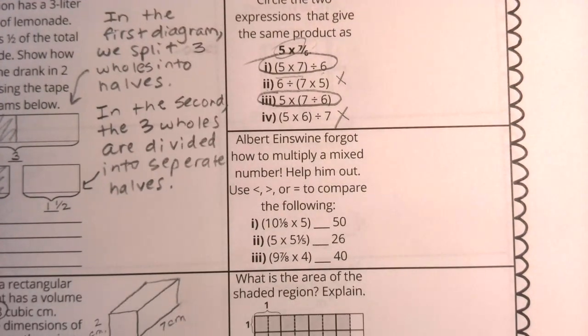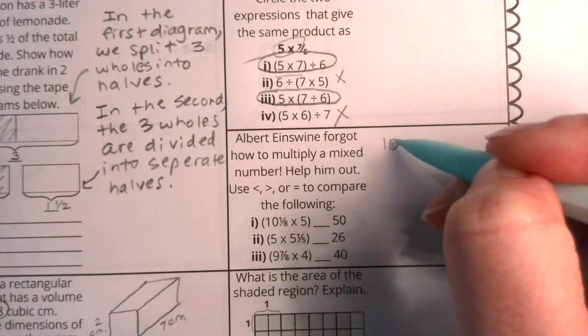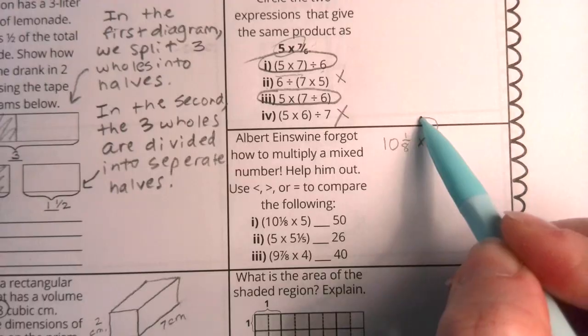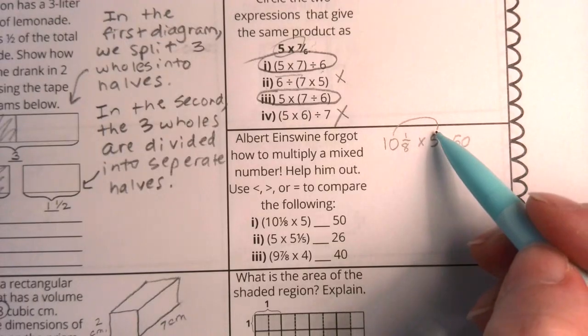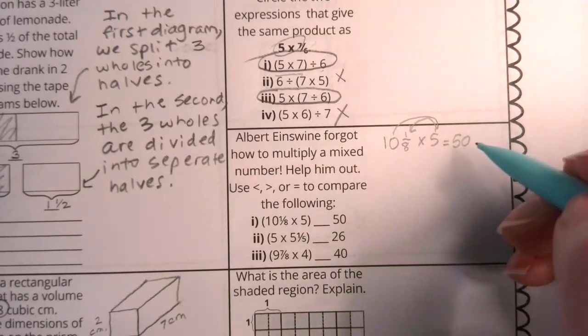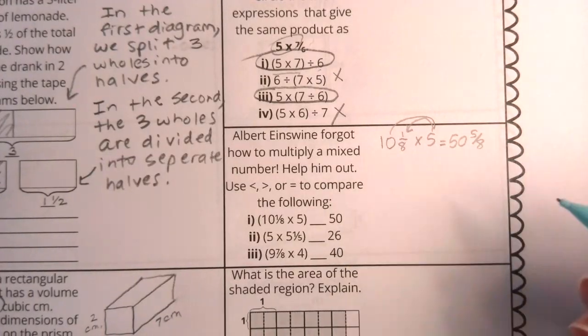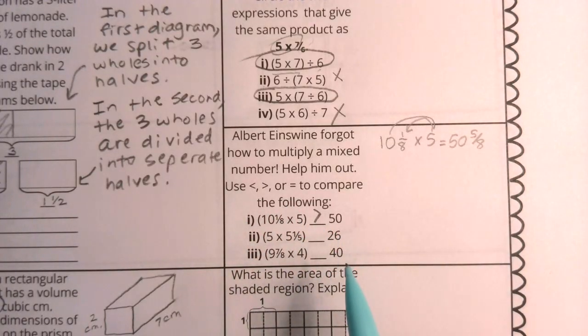Our next one says Albert Irmwine forgot how to multiply a mixed number. Help him out. We're going to use some comparison symbols. So first of all, let's take a look at this. If I have 10 times 5 1/8, I'm first going to combine my five times five, and that's going to give me 50. Then I'm going to have my five times one eighth. That's going to be even a little bit more than 50 because that five times one eighth would make it five eighths. So this would actually be 50 and five eighths. So we know very clearly that this value is greater.